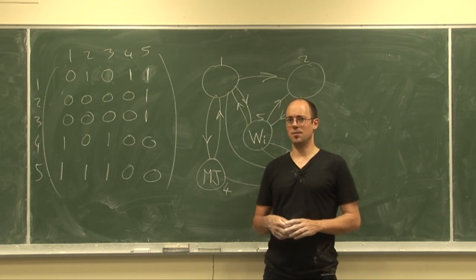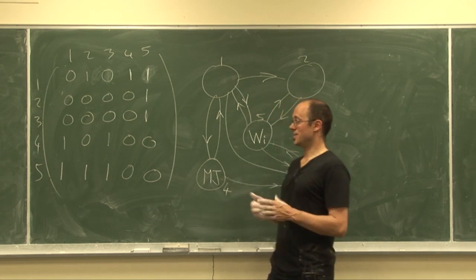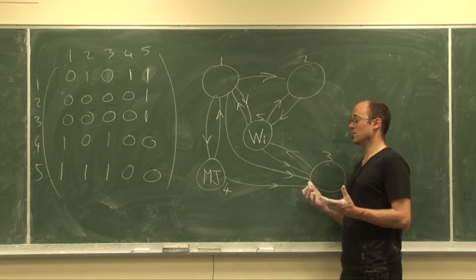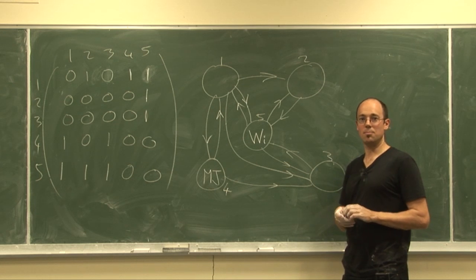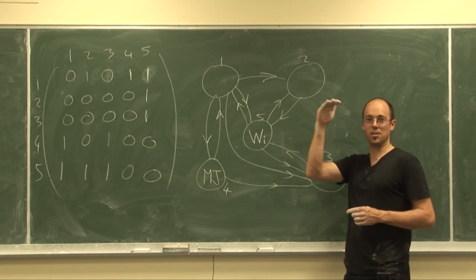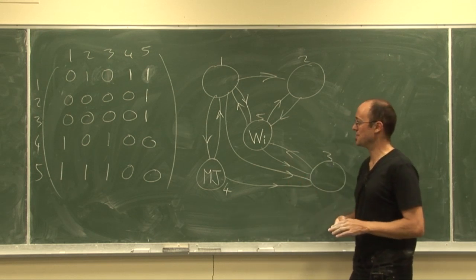So I wanted to give just a very elementary to understand instance, which is the use of linear algebra by Google. When you do a Google search, how does Google decide what order your webpages should be presented to you? What comes up first? Why does Wikipedia come up first? Why doesn't my webpage come up first?